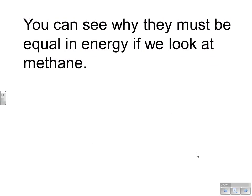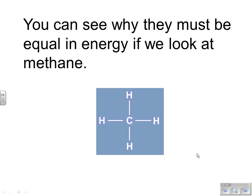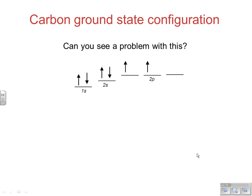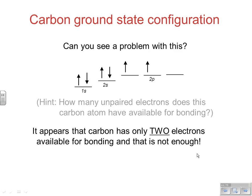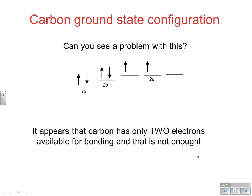Where do hybrid orbitals come from? It depends on the situation. Methane was one of the first molecules they tried to explain. The carbon ground state configuration has 1s with two electrons, 2s with two electrons, and on the 2p sublevel only two electrons. The problem is it appears we only have two electrons available for bonding, and we know that's not enough — CH₄ has to form four bonds.